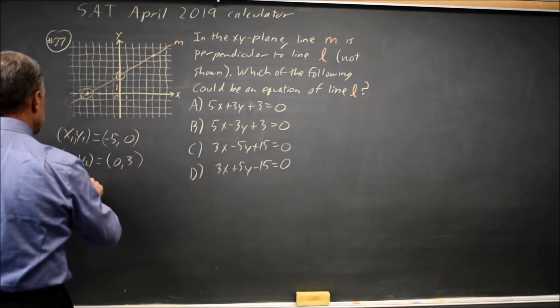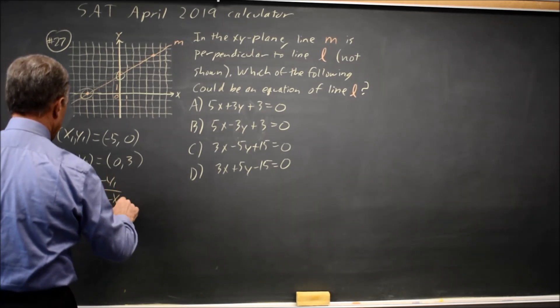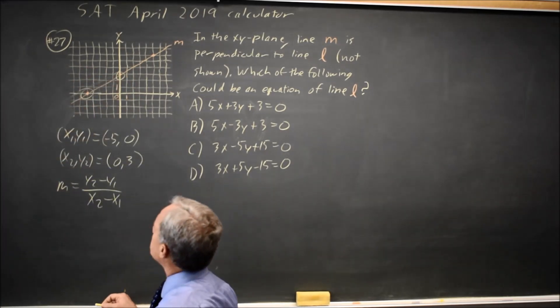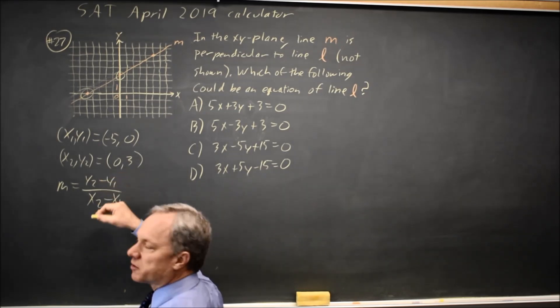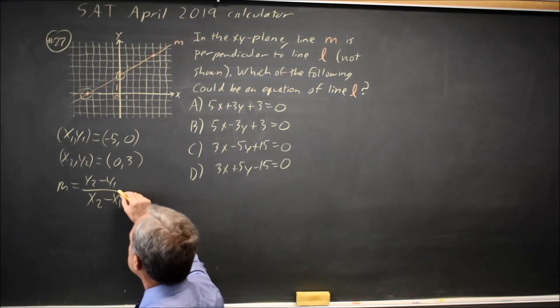So my slope is y2 minus y1 over x2 minus x1. And this is nice because it's a formula, and it's a formula that's very familiar. The things to watch out for is make sure that you have your y's in the numerator and x in the denominators. Don't flip it. And also, don't swap the coordinates for one of them without swapping coordinates for both.